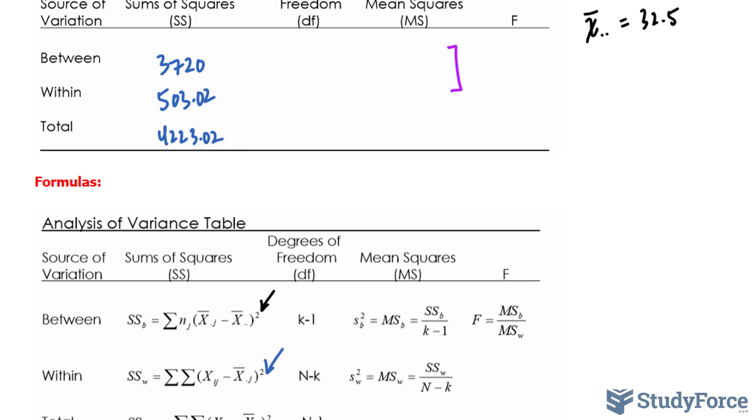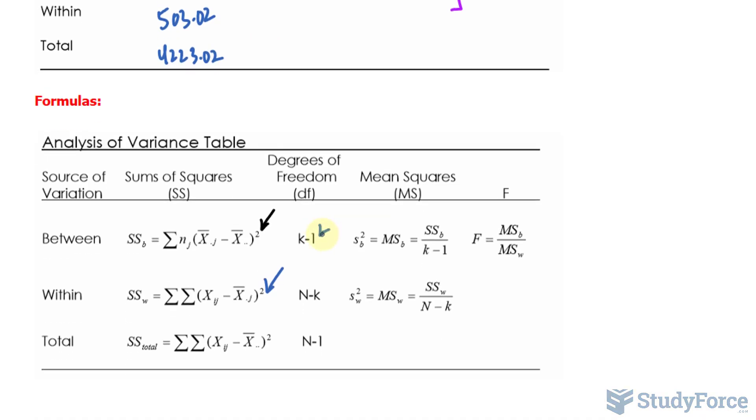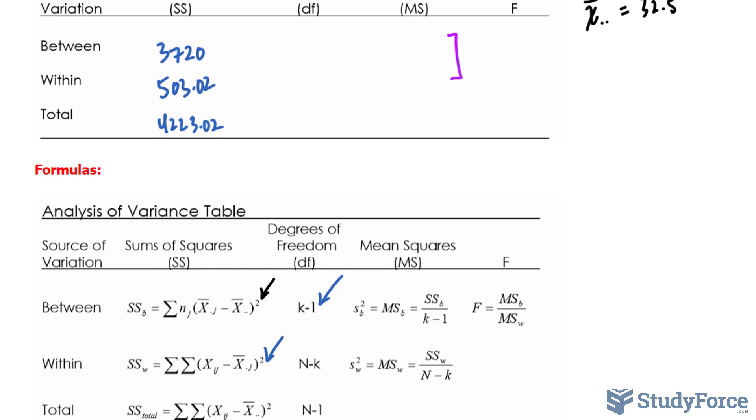Now the easy part, the degrees of freedom. Let's look at the formula. We have k minus 1 for that first one. k represents the number of groups. We have 4 strains, so 4 minus 1 is 3. Big N represents the total number of individuals. We have 32, because 8 times 4 is 32, minus k, that's 4, and that gives us 28. Adding these up, we get 31.